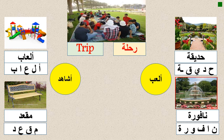Also أشاهد - I can watch a nice flower. I can watch نافورة. I can watch the grass, the trees, and the flowers in the park.